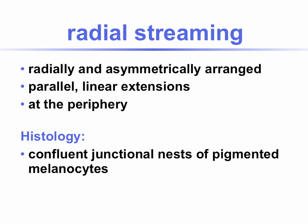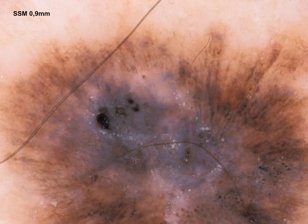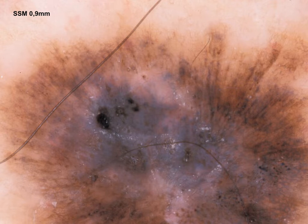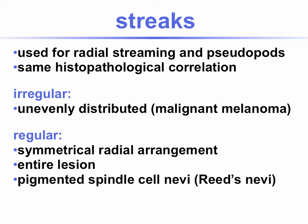Radial streaming. These are radially and asymmetrically arranged parallel linear extensions at the periphery of a lesion. Histology shows confluent junctional nests of pigmented melanocytes. In the case of a melanoma of the lower leg, dermoscopy shows dark streaks oriented towards the periphery, especially in the right upper part of the lesion. In the center, you see blue-white veil, irregular blood vessels, and atypical dots and globules.